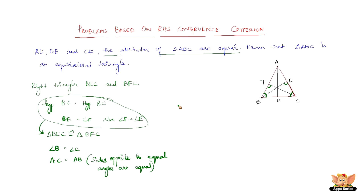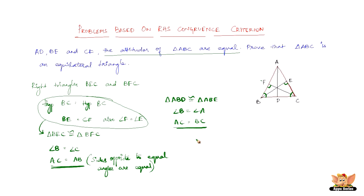Similarly, we can prove that triangle ABD is congruent to triangle ABE, just as we proved BEC is congruent to BFC. From this, we get angle B equals angle A, and AC equals BC, by the same reasoning — CPCT and sides opposite to equal angles. So from both results, AB equals BC.